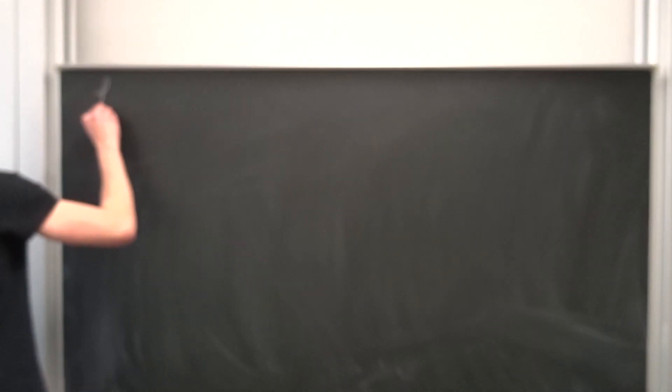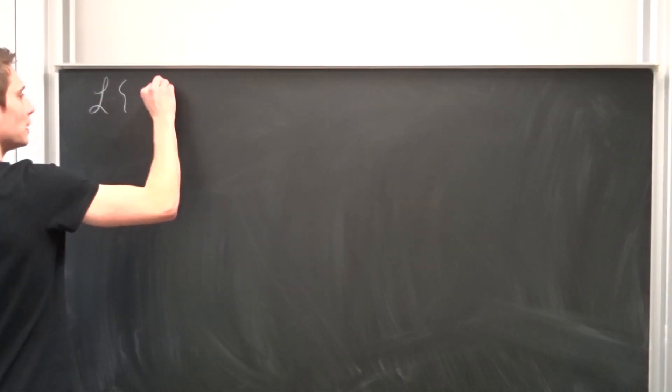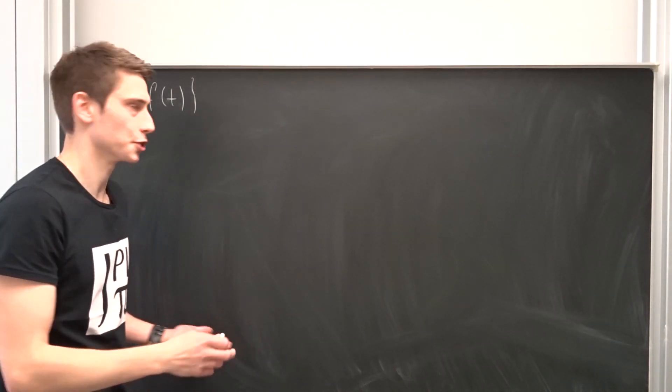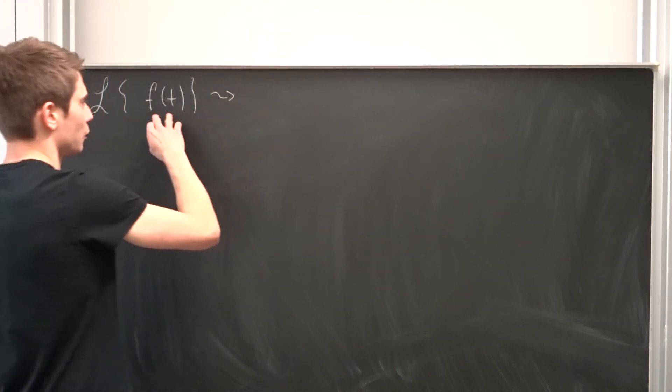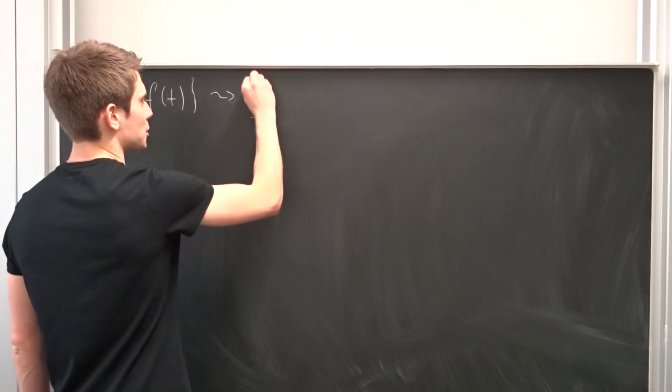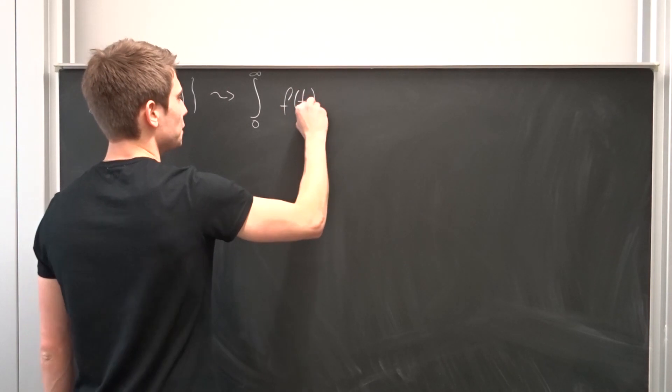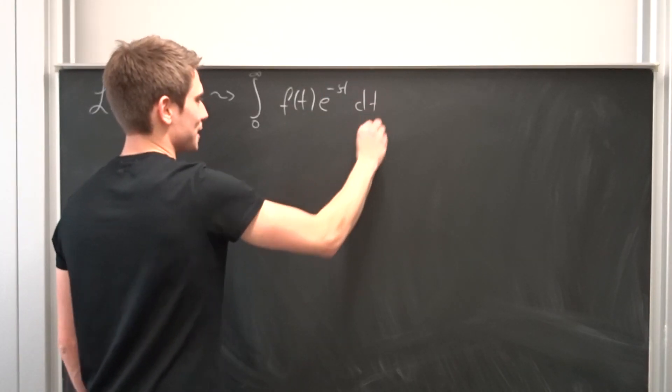So that would mean we've got the Laplace transform of f of t. And we are going to start off by using the definition of Laplace transform. So if we use this on f of t, that's just the improper integral from zero to infinity of f of t times e to the minus st times dt.